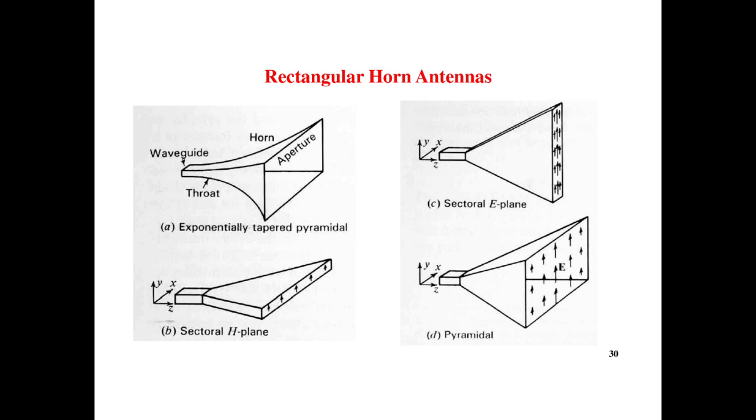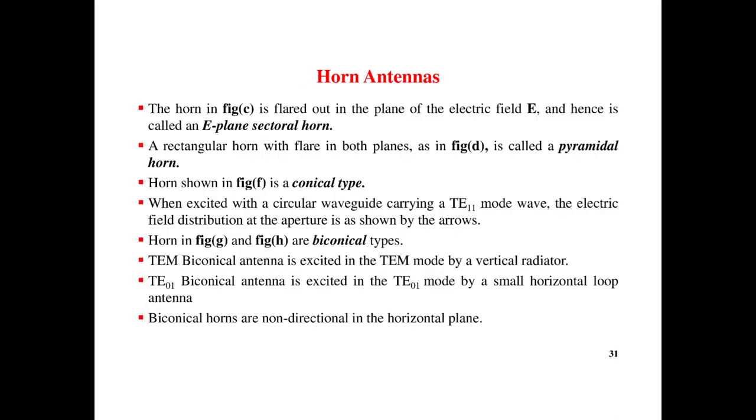Here you can see the different types of rectangular horn: exponentially tapered pyramid, sectoral H-plane, sectoral E-plane. The horn is flared out in the plane of electric field and hence it is E-plane sectoral horn. A rectangular horn with flare on both sides is called pyramidal horn.